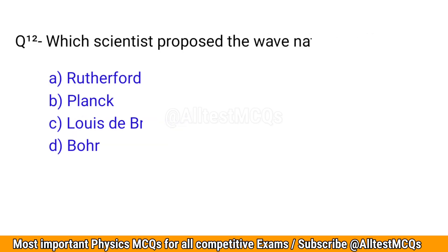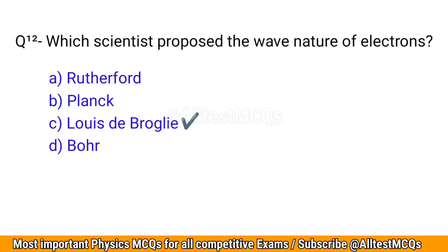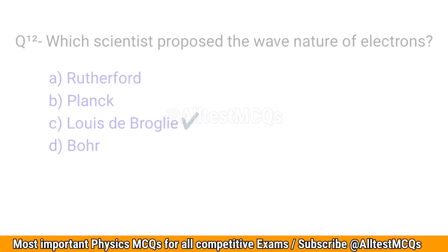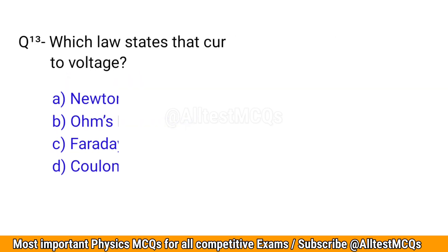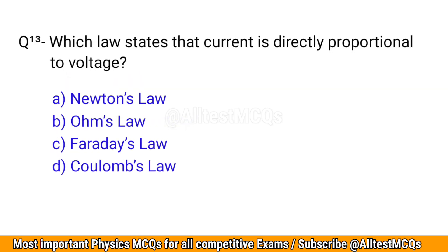Q12. Which scientist proposed the wave nature of electrons? The correct option is C: Louis de Broglie.